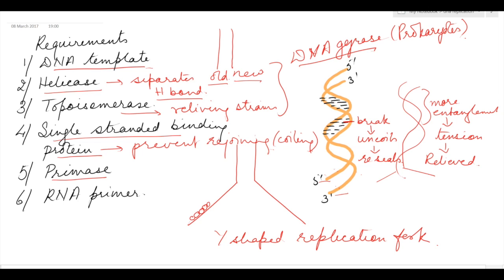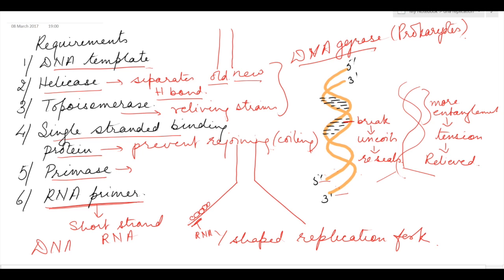Next is primase. Primase is the enzyme required for the formation of RNA primer. RNA primer is a short strand of RNA formed at the ori, because DNA polymerase — which forms the new strand — needs a free hydroxyl group at the 3' end, which is provided by the RNA primer.